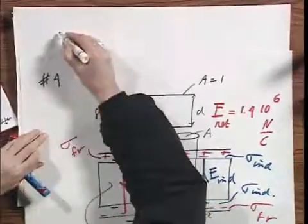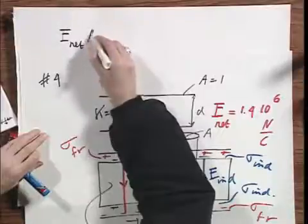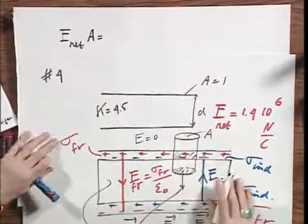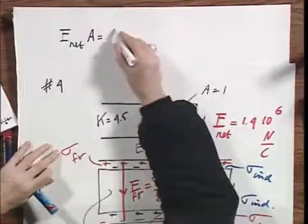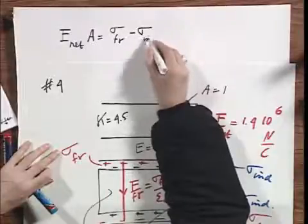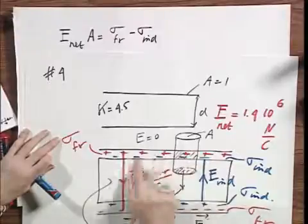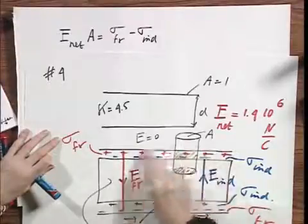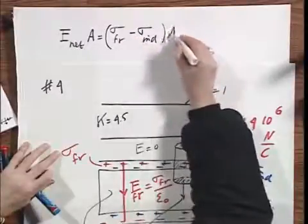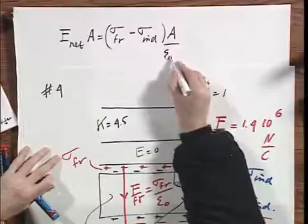And I want to write down now Gauss's law in two different ways. First, I'm going to say that E-net times that area A is the total charge inside that box divided by epsilon zero. What is the total charge inside that box? That is sigma-free minus sigma-induced. The minus sign because the induced charge here is negative. And I have assumed that this metal plate here is positive, times A, this is the total charge inside my pillbox divided by epsilon zero.